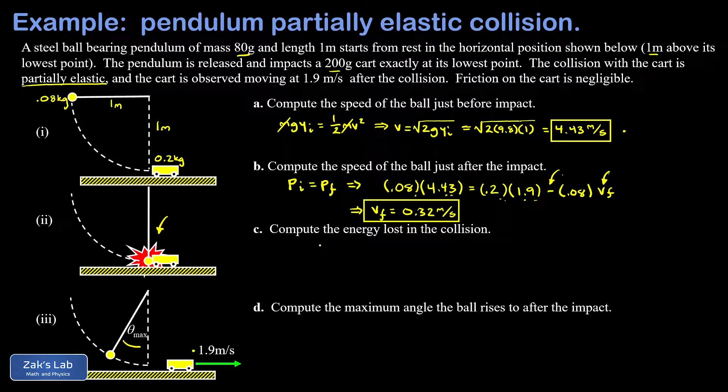In part C, we want to get the energy lost in the collision. All we have to do is compare the energy before the collision to the energy after the collision. We'll start by looking at the initial energy, K initial. There are actually two ways to do this. I could look at one half MV squared just before the collision occurs and use the V computed in part A. But I also know that the kinetic energy in that pendulum bob just before the collision was equal to the gravitational potential energy at the beginning of the problem.